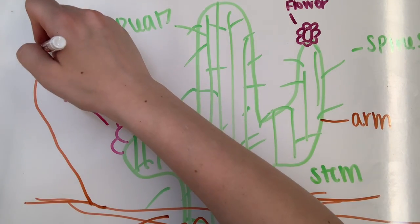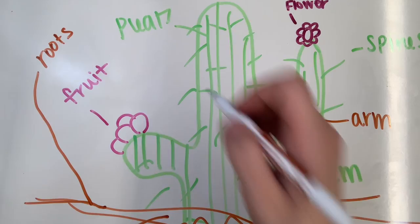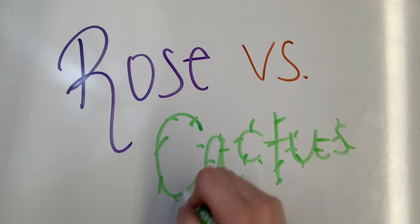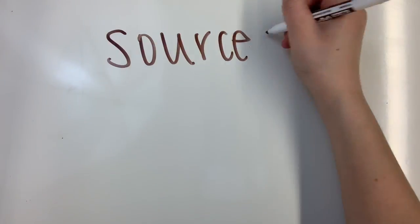The final is the roots. These provide an anchor into the ground and take in water and nutrients, allowing the cactus to survive. Now you know the difference in a life cycle between a cactus and a rose. You also know where they get the materials needed to survive. Here are the sources that I used.